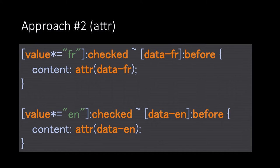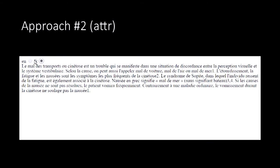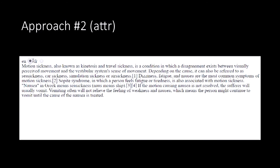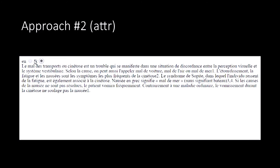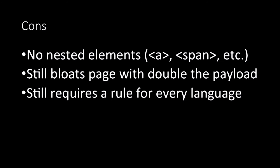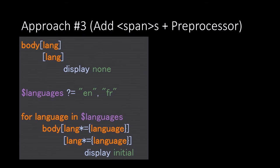The second approach I took was using the pseudo-element — using the checkbox check state and then `::before`, you can just append the data as if it were all in attributes. It looks exactly the same, but there's a problem: you can't have any nested elements like anchor tags or span tags. So it bloats the page, and it still requires a rule for every language, which is problematic.